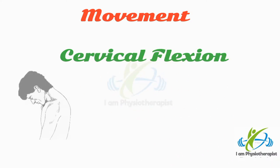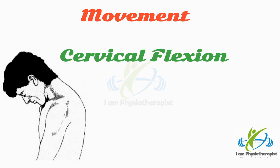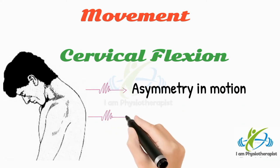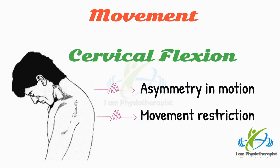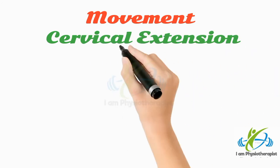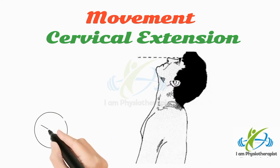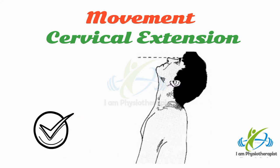Check cervical flexion by asking the patient to bend his head forward. Note any asymmetry in motion or movement restriction. Check cervical extension by asking the patient to tilt the head backward. The plane of the nose and forehead should nearly be horizontal.